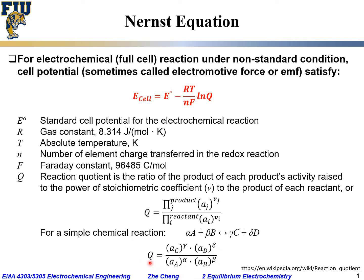This entire equation gives us the cell potential under equilibrium when conditions are not standard — not exactly at 25 degrees C, and the concentration for species may not be the standard concentration. We then use the Nernst equation to calculate the equilibrium cell potential under these conditions.